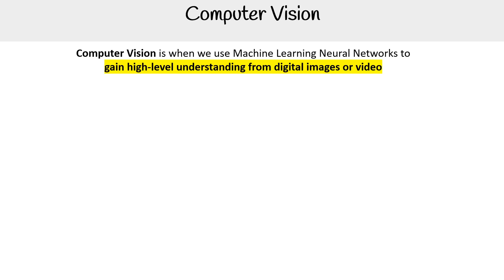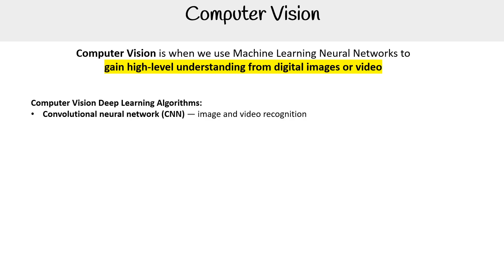Computer vision is when we use machine learning and neural networks to gain high-level understanding of digital images or videos. For computer vision deep learning algorithms, we have convolutional neural networks.